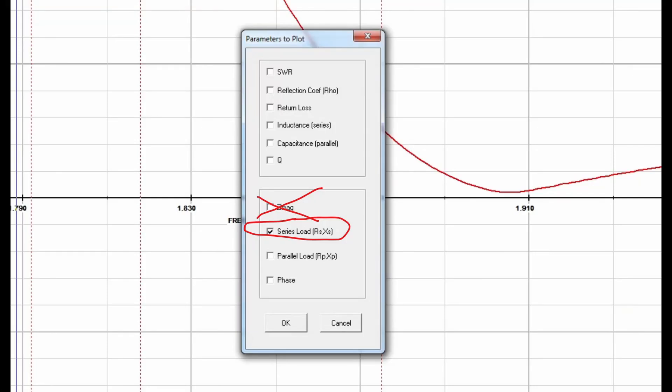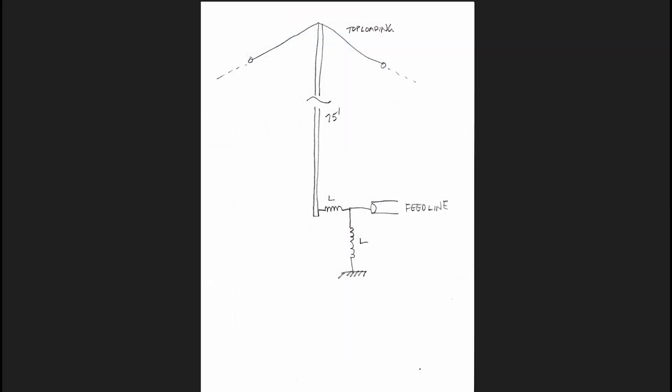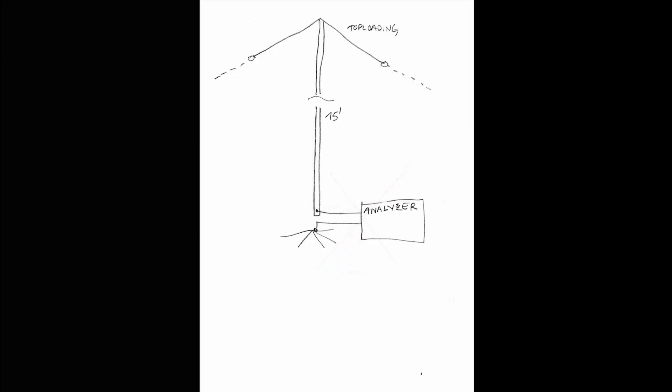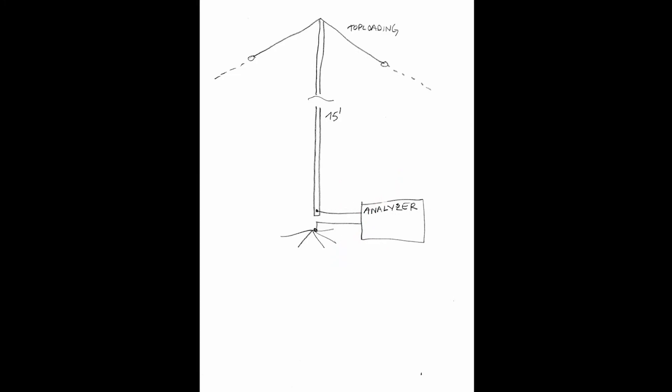Second, don't look at the impedance sweep on the analyzer. We're looking at the real resistance and reactance curve. That's R and X, not impedance. Third, we're sweeping the driven element with no matching network, just the raw element. Remove any hairpins, LC networks, Ununs, stubs, or anything used to match the coax. Just connect the analyzer to the bare element.